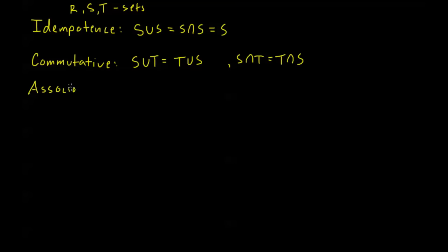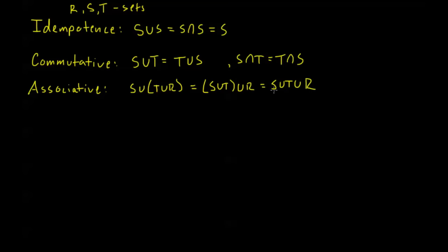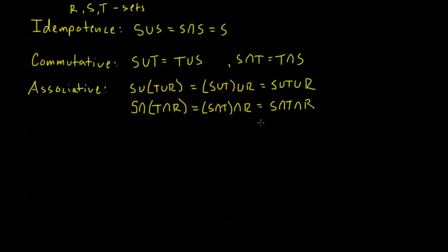We have our associative laws. That basically says that S union with the set (T union R) is the same thing as (S union T) union R — just S union T union R. When we have the same set operation, if it's all unions or all intersections, the way that we associate it or where we put the parentheses doesn't change what's in the set. Similarly, S intersection (T intersection R) equals (S intersection T) intersection R, which is just S intersection T intersection R.